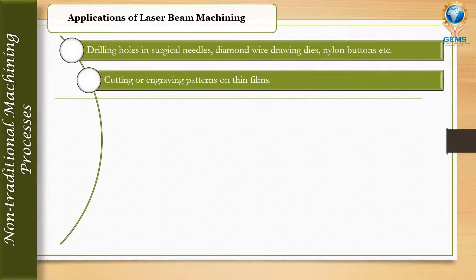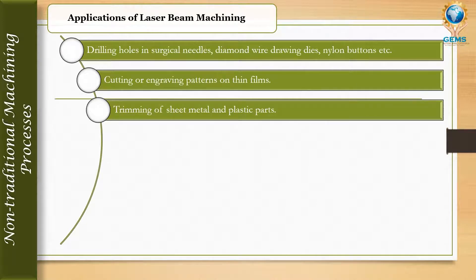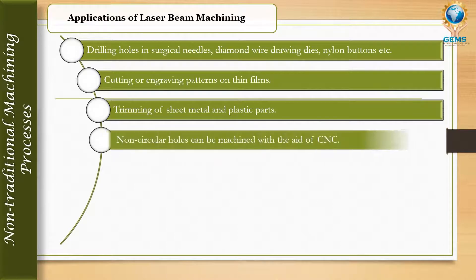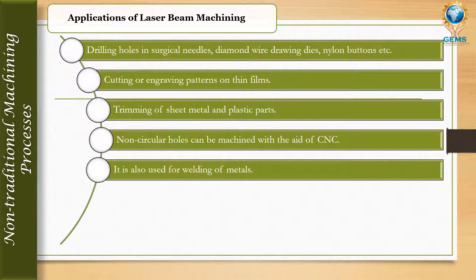Laser beam machining is used for cutting or engraving patterns on thin films, and for trimming sheet metal and plastic parts. Non-circular holes can be machined with the aid of CNC (computer numerical control). It is also used for welding of metals, not only for cutting and drilling.